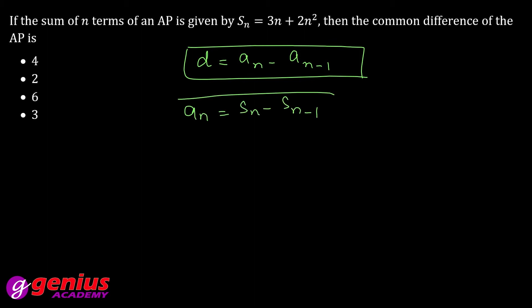First you find an, then you find d. That means an equals Sn, how much? 3n plus 2n squared, minus Sn minus 1, which is 3(n minus 1) plus 2(n minus 1) squared.